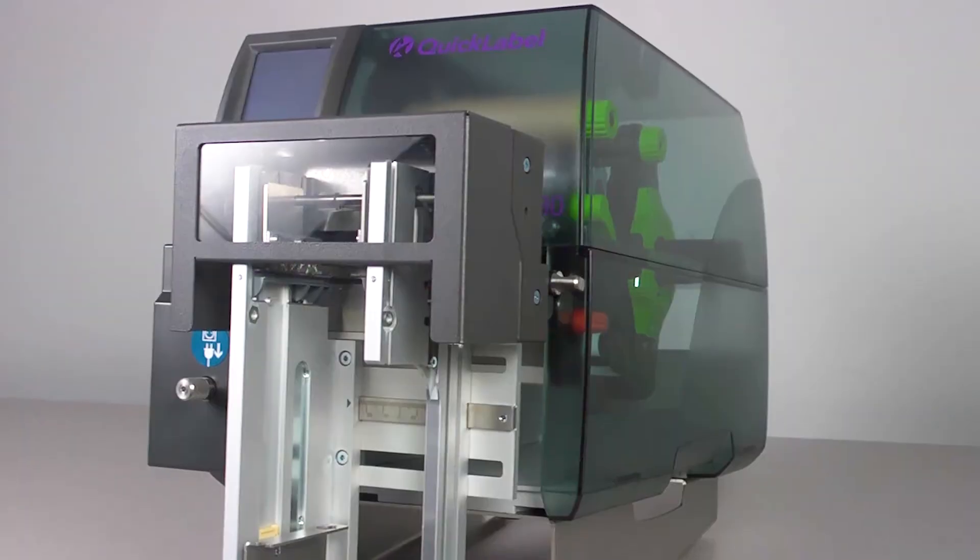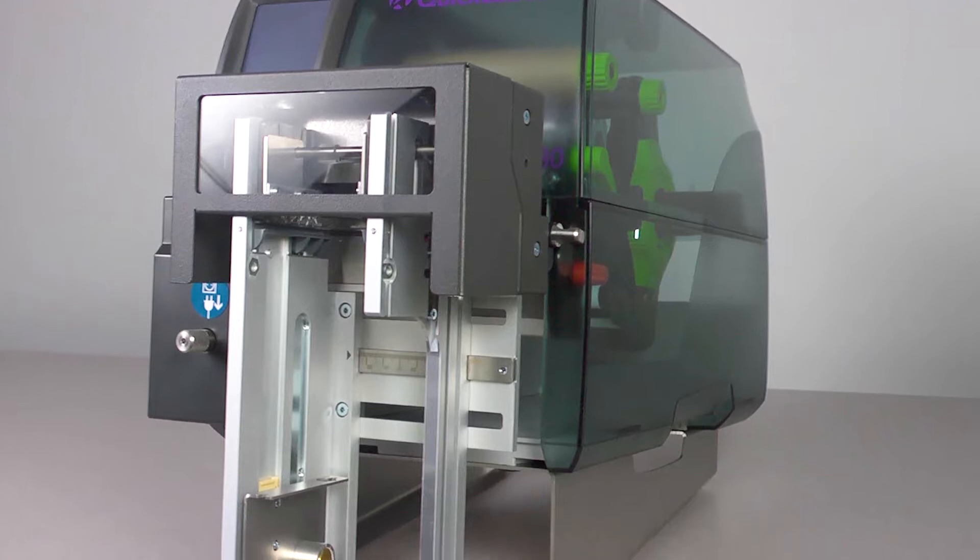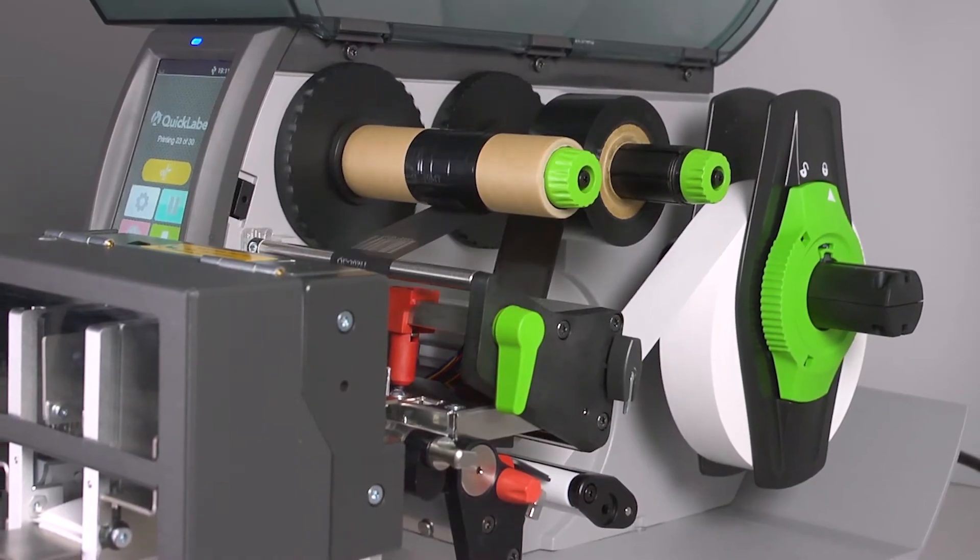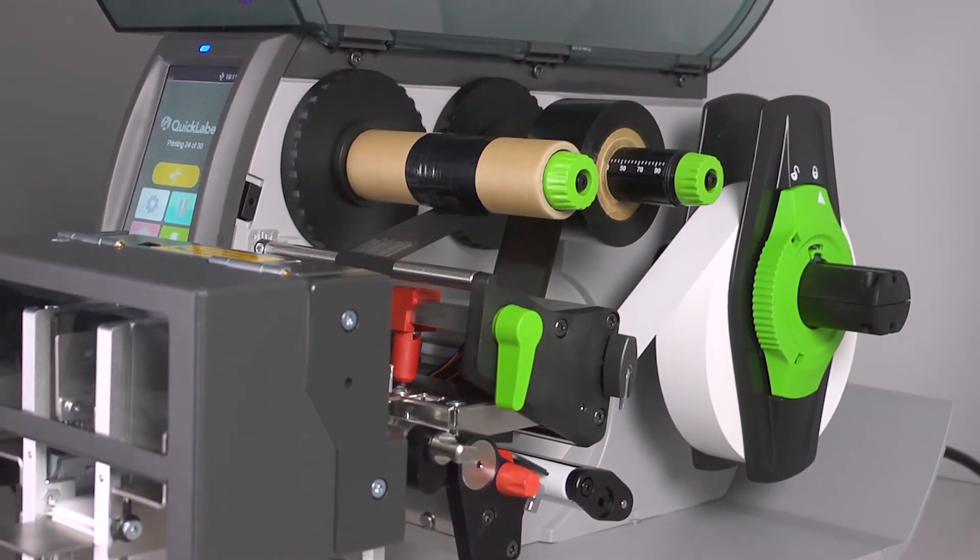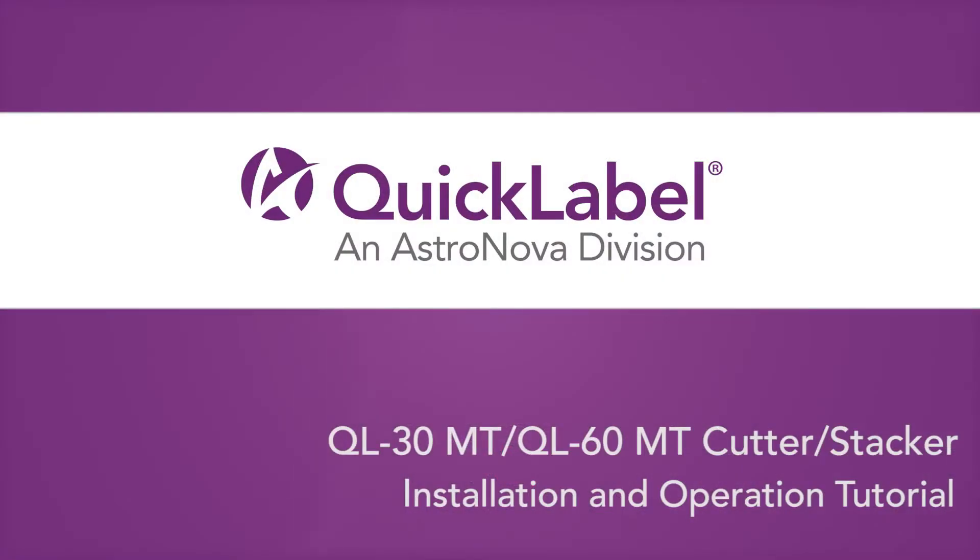The QL30MT and QL60MT are textile monochrome high-speed thermal transfer printers designed to print perfectly on textile material. The cutter and stacker is a modular accessory that can be attached to the QL30MT or QL60MT in order to cut and stack printed material. This tutorial will show you how to attach and operate the cutter stacker.